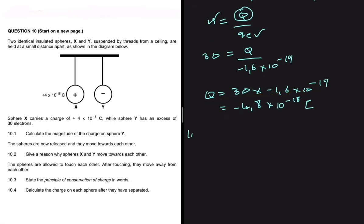Let's move to 10.2. So 10.2 is saying that the spheres are now released and they move towards each other. Give a reason why spheres X and Y move towards each other.